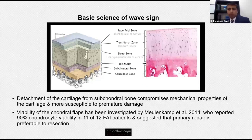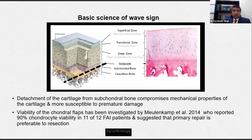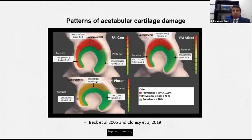The basic science of a wave sign involves detachment of the articular surface from the subchondral bone, which compromises the mechanical properties of articular cartilage, leading to premature damage. This was looked at by Bob Boulay's group in 2014, who asked whether it is worth trying to salvage these articular cartilage lesions. They found up to 95% chondrocyte viability in patients with FAI symptoms, though this figure varies in the literature from 40% to 90%.